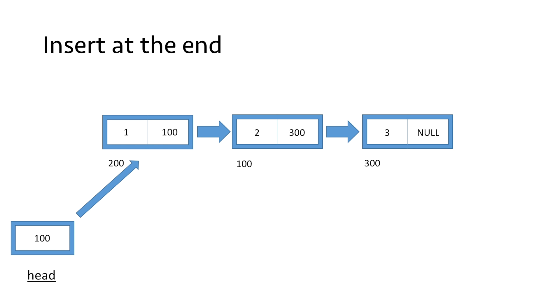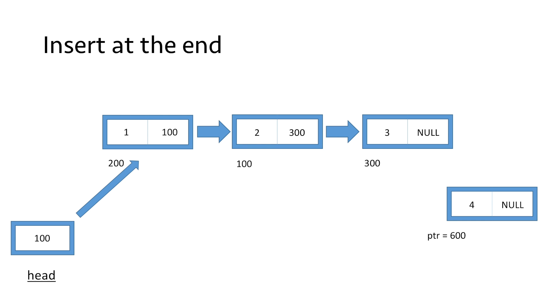Now let's see how we will insert an element at the end of our linked list. Suppose we have a list with nodes containing values 1, 2, and 3 respectively, and we want to insert a node with value 4 at the end. So we create a new node using the new operator and return its address in pointer ptr. Let's say the address is 600. We put the value 4 in the data section of this node, and we put null in the link part, as this will now be the end of our linked list.